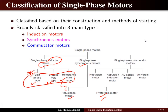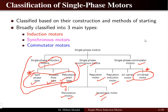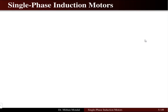When we talk about commutator motors, there are categories like repulsion motors, repulsion induction motors, AC series motors, and universal motors. Universal motors are used in many applications because of their very high speed — even toys use universal motors. We will focus our discussion on single-phase induction motors and their various types in the coming lectures.